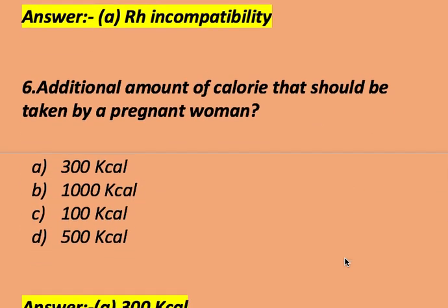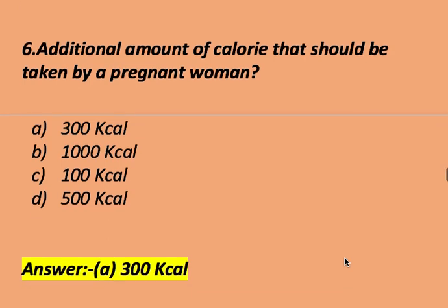Additional amount of calories that should be taken by a pregnant woman? Options: 300 cal, 1000 cal, 100 cal, 500 cal. The right answer is 300 kcal. The additional amount of calories that should be taken by a pregnant woman is 300 kcal.